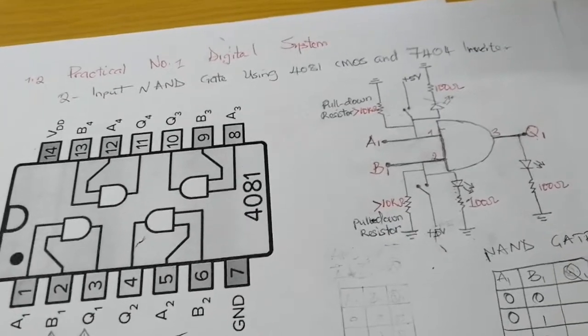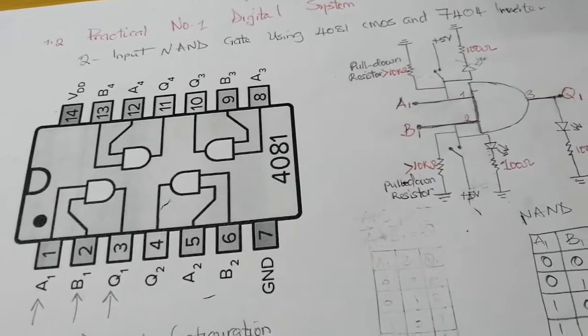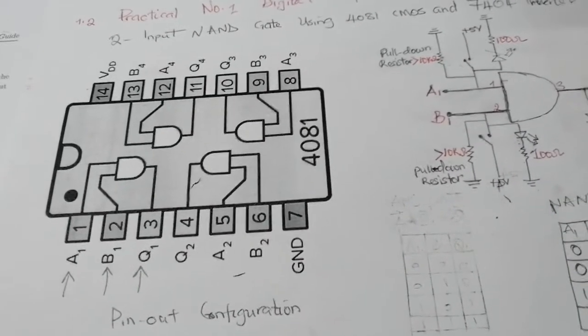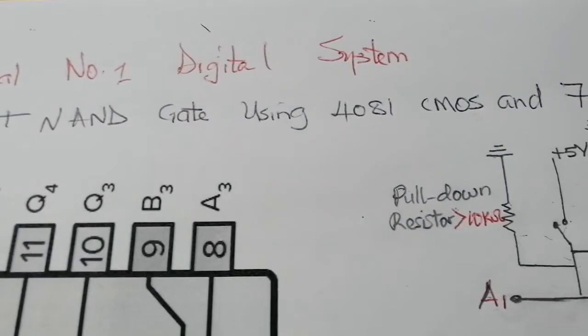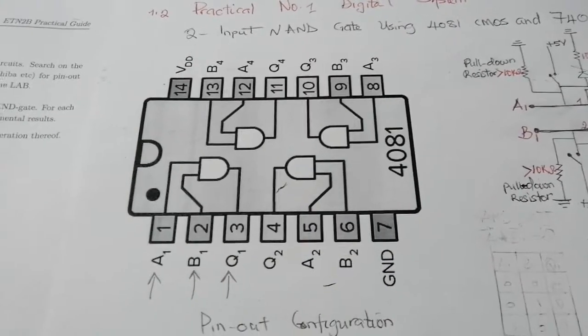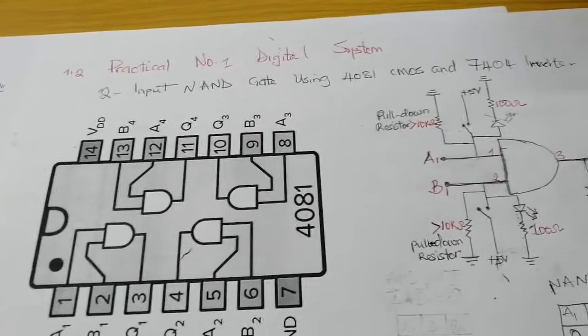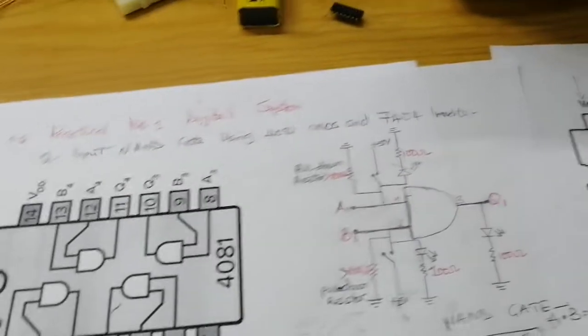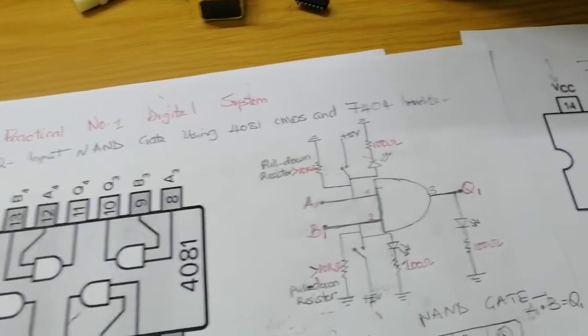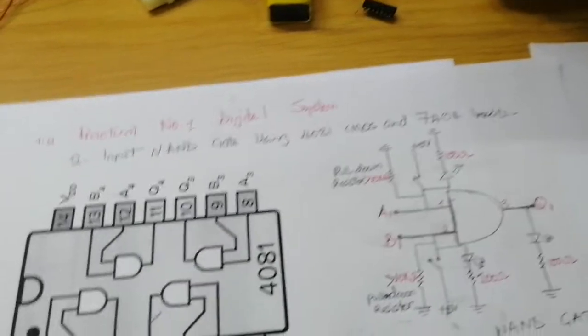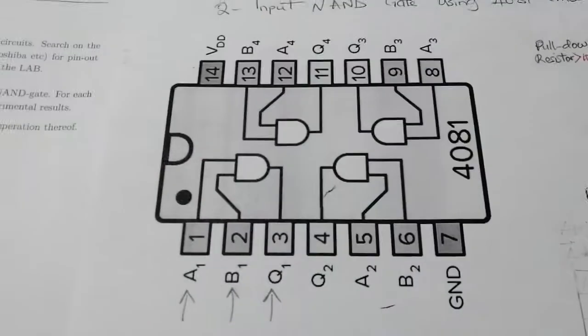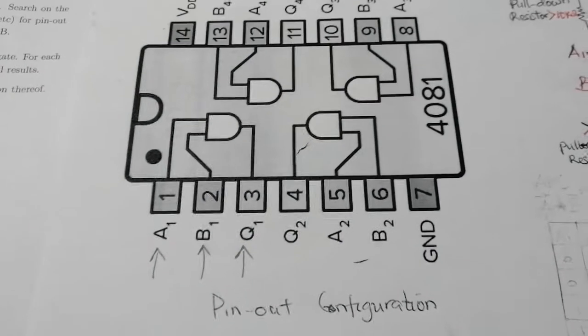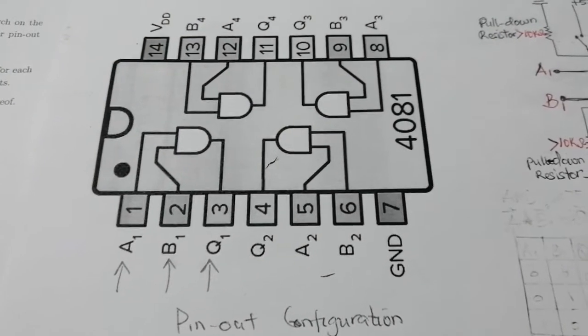I didn't have a NAND gate available, so I decided to use an AND gate with an inverter. I'm using a 7481 and a 7404. You might be privileged that in the lab they'll give you a NAND gate CMOS, but if you don't get the NAND gate CMOS, you have to improvise by using an AND gate and an inverter. This is my pin configuration for the AND gate — for those who watched the previous video, this shouldn't be a problem.